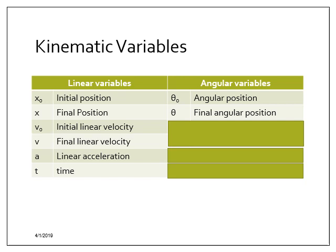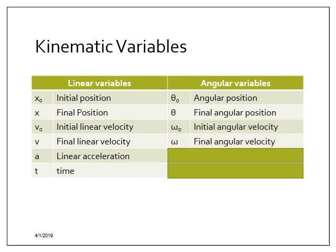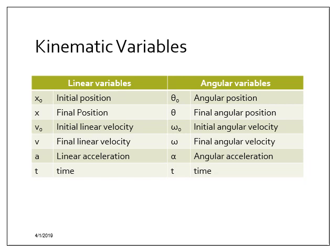So we use theta-naught and theta for angular position. For angular velocity we use omega — another Greek letter, which looks like a curvy W — giving us initial and final angular velocity. Angular acceleration is alpha, a curvy Greek version of 'a'. Time has no rotational counterpart — time is just t, the same in both lands. Throughout this video you'll hear me say 'linear land' and 'rotation land' to distinguish the familiar variables from the new ones.